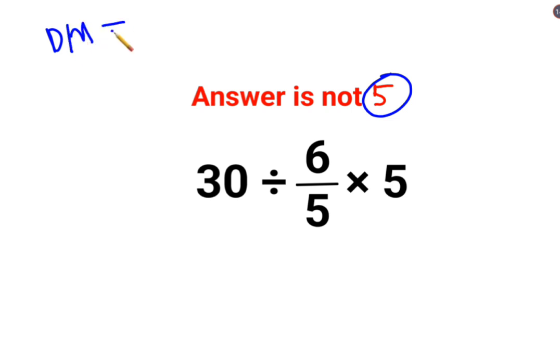So in sums like these, you go from left to right. Whatever operation happens first on your left hand side has to be done first. So first we will do 30 divided by 6/5.